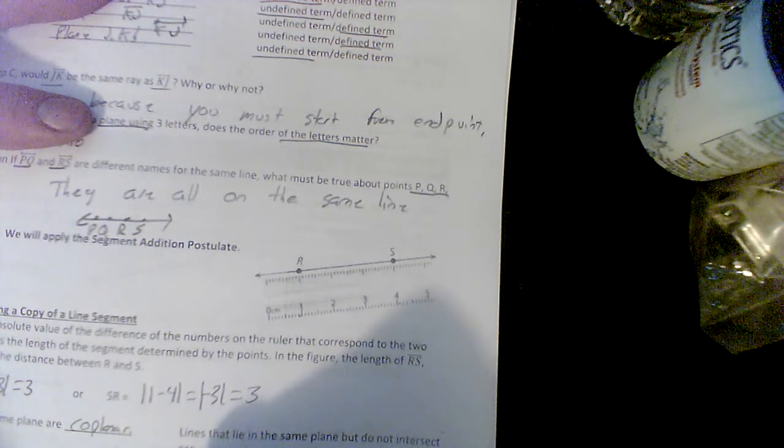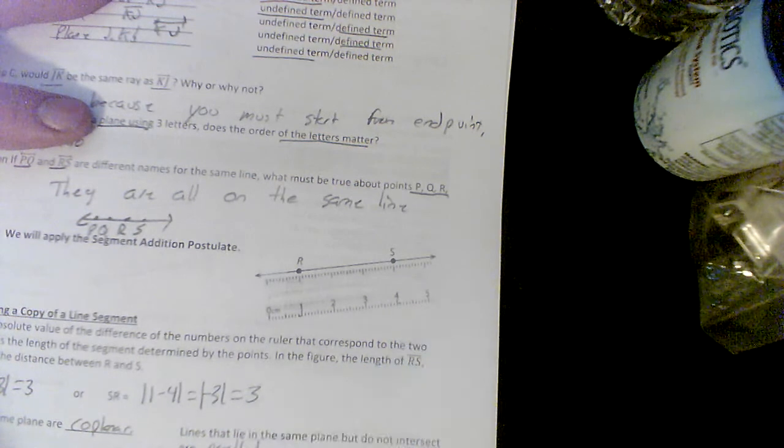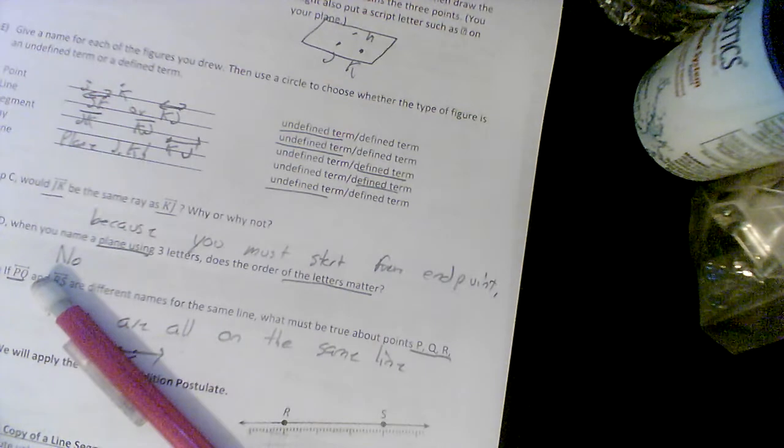Lines that lie in the same plane but that do not intersect are parallel. We're going to stop here. That's pages one and two. I'll list them up there, and that's the end of this video.